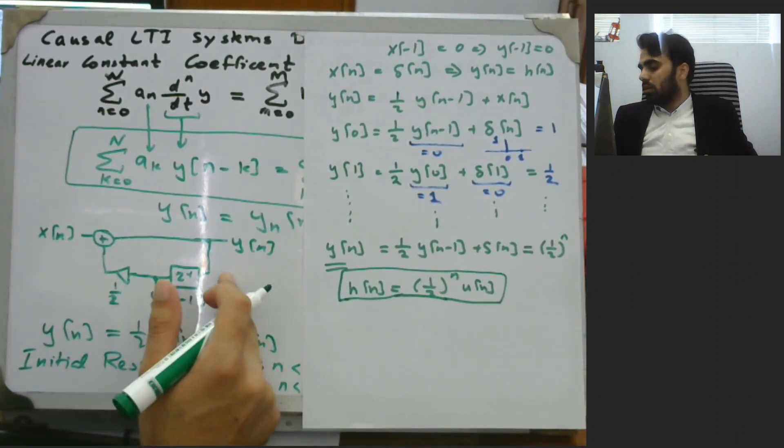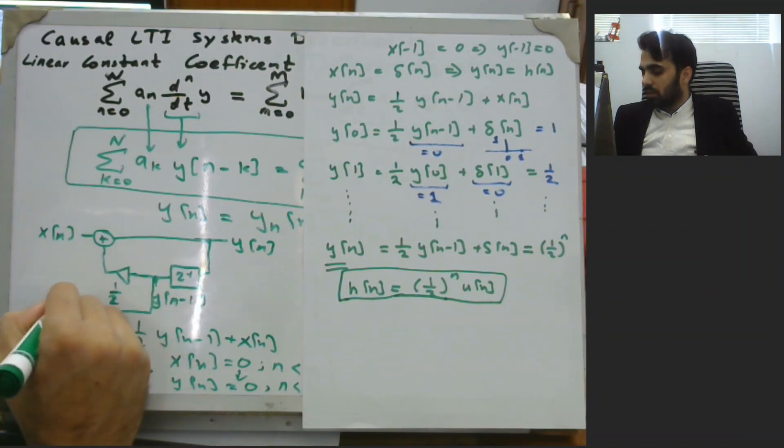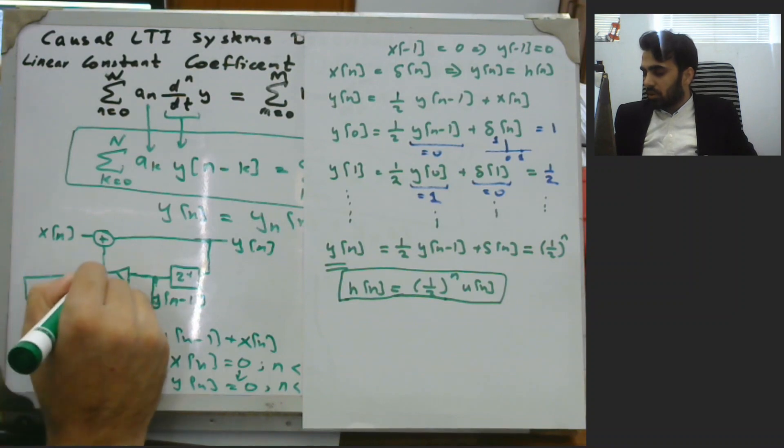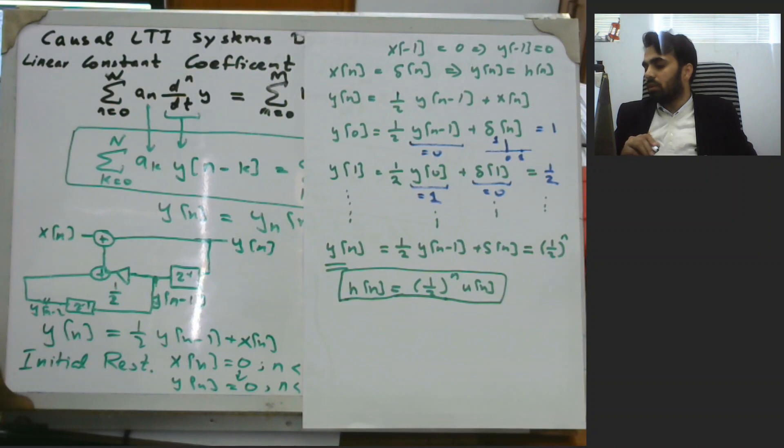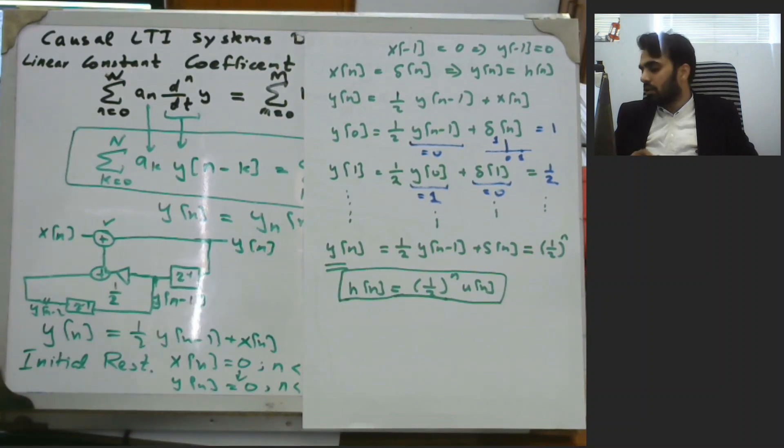If you pull this out, you can have another z inverse. So this would be y of n minus 2. And then we can have a summation block over here, and that feeds to the summation junction over here, and that would be related to y of n. That would become the second order difference equation, and so on. In the same way you can find the impulse response h of n.